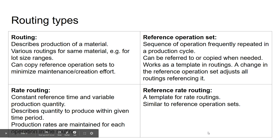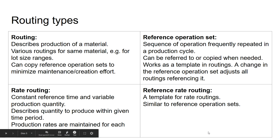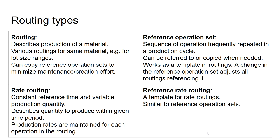There are different routing types. First, there is the routing as such — a standard routing that describes the production process of a material. You can have various routings for the same material; for example, you could have a routing for each lot size range. A special feature of routings is that you can use reference operation sets within them to minimize the effort for creating or maintaining the routing. You can reference or copy a reference operation set to describe part of your operation sequence.